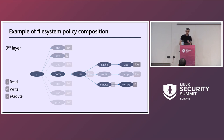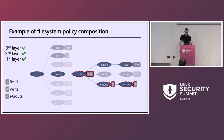How does this work? Let's say we open cool.jpeg. The first layer grants read access — that's okay. The kernel then checks the second layer and finds it granted access to the pictures directory — also okay. Then the kernel checks the first layer, which grants access to the home directory — that's okay too. Everything is checked and the access is allowed.